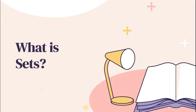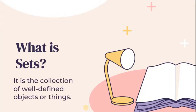What is a set? According to the Webster Dictionary, it is the collection of well-defined objects or things. Para mas madali maunawaan kung anong ibig sabihin ng sets, magfocus lang tayo sa salitang well-defined. Bakit? Kasi hindi lahat ng mga bagay na nakikita natin, group of things, ay pwede natin i-considered as sets.